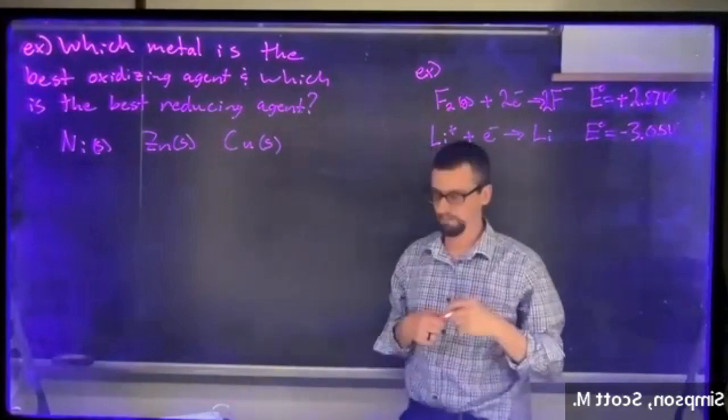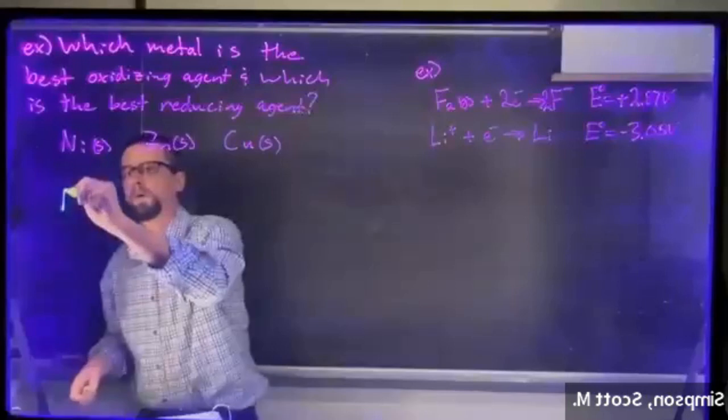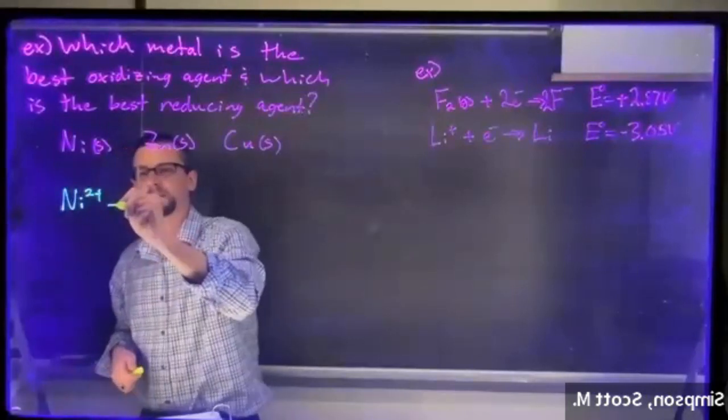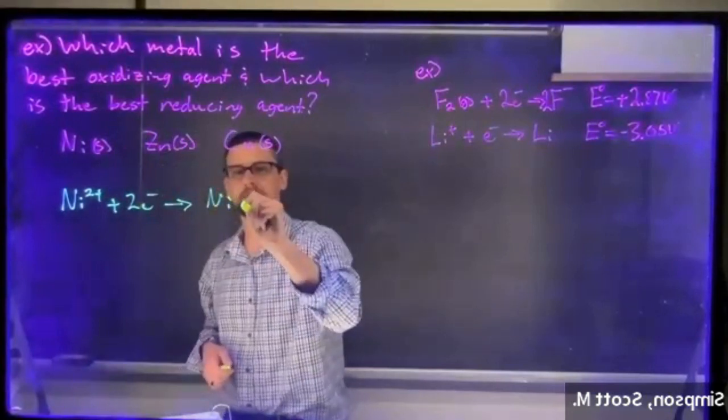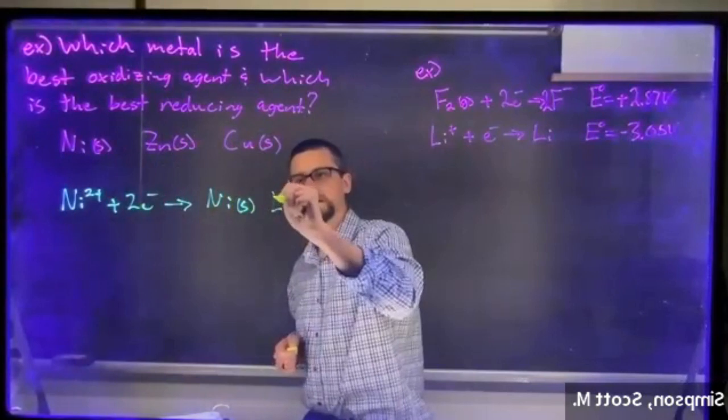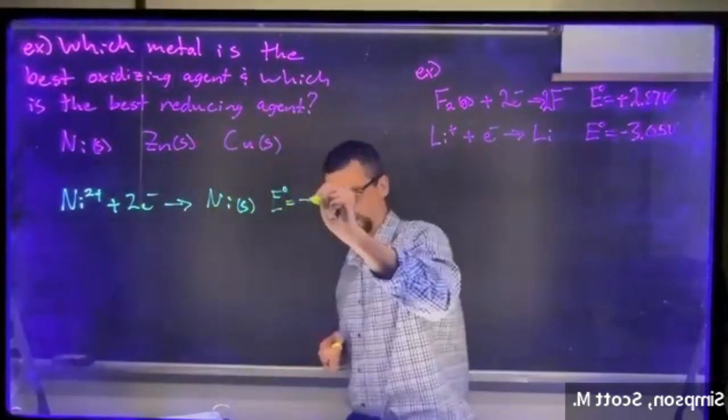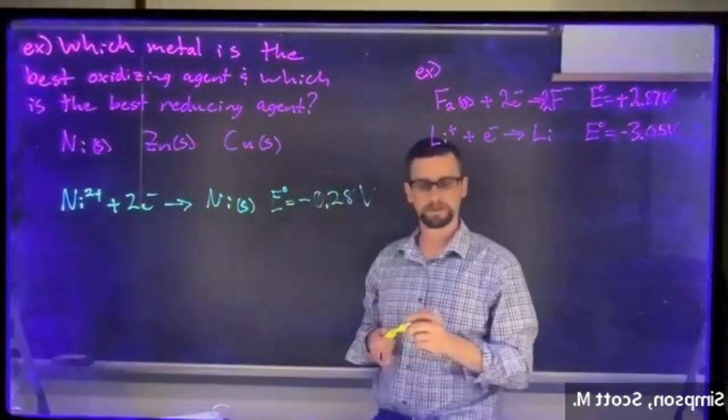We have nickel 2+ plus electrons going to nickel solid. In that case, E° is equal to negative 0.287 volts.